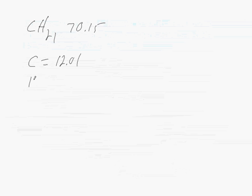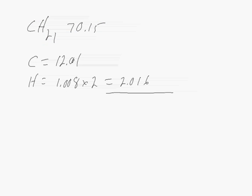If we take our hydrogen, we have 1.008 times 2, which gives us a total of 2.016. If we add these two together, 12.01 and 2.016, this gives us a total of 14.03.